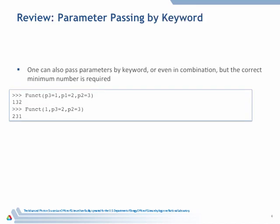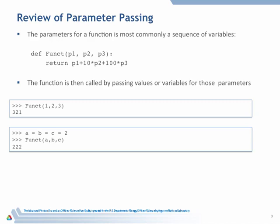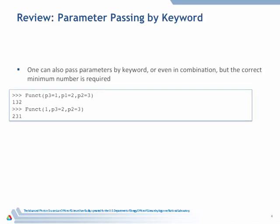Now, built into the basic language of Python is also this idea that each of these parameters here has a keyword associated with it, p1, p2, and p3. And I can pass any or all of those parameters by specifying the keyword. And when I do that, I can do it in any order. And I can even mix it. The first parameter is going to be p1, and I can specify the other ones by keyword.